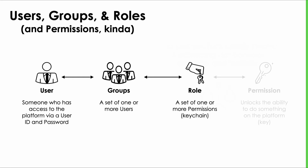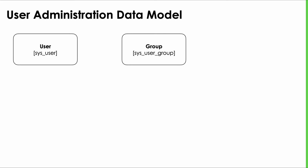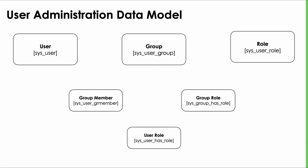ServiceNow comes out of the box with an application named User Administration, dedicated to managing all these users, groups, and roles. It's all made possible by a set of database tables designed for storing these things and the relationships between them. Pretty much everything in ServiceNow is just a record in a database table somewhere. The sys_user table stores a record for each user. The sys_user_group table stores a record for each group. And the sys_user_role table stores a record for each role.